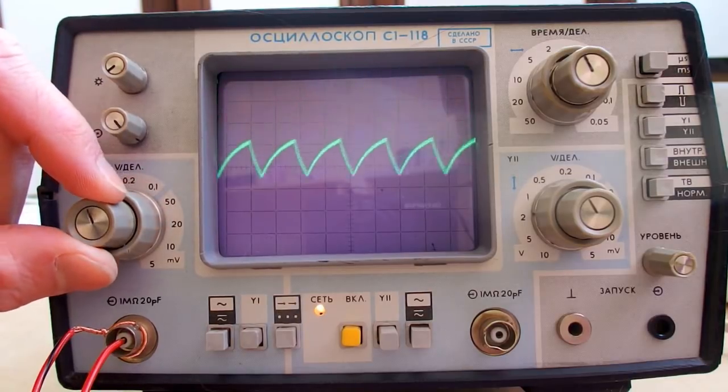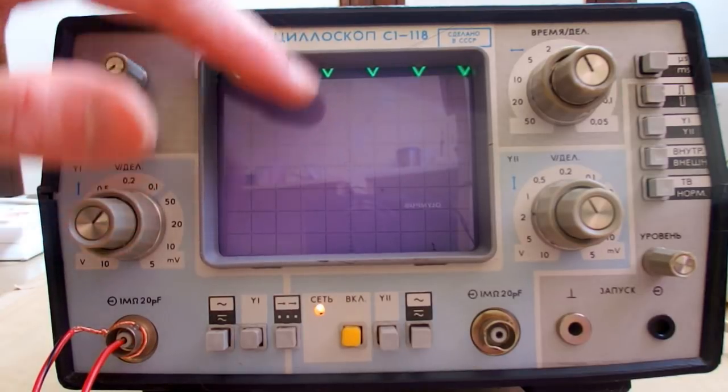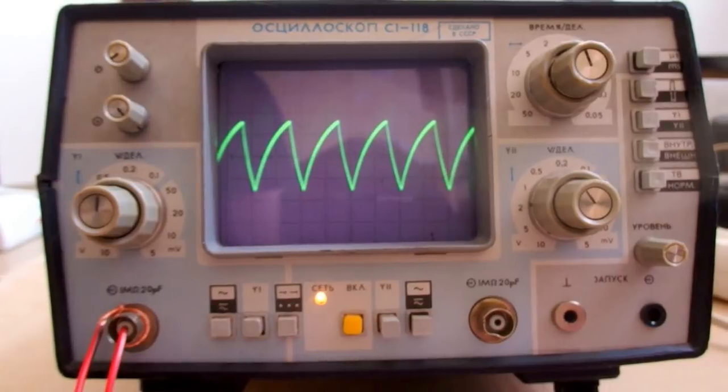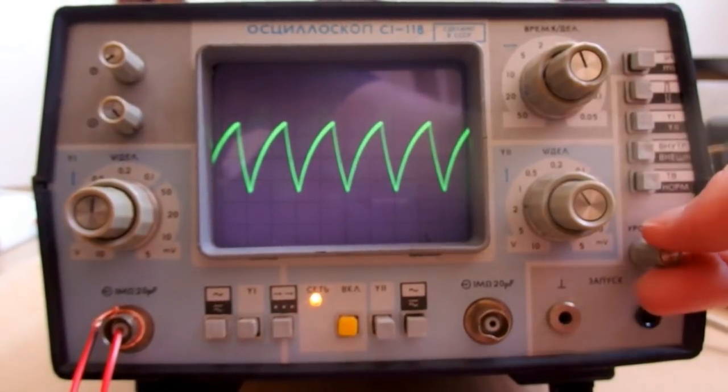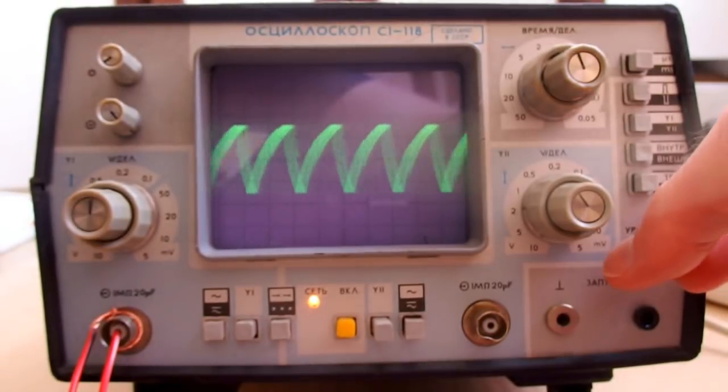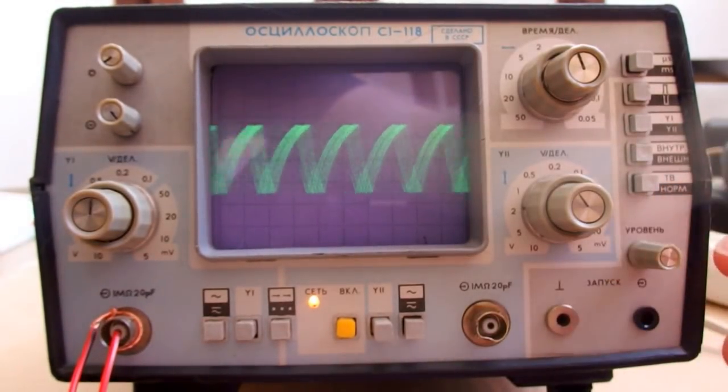Sometimes you have to move it like this to find it. It may disappear behind the edges of the screen. Here's the sync level knob. To set the sync level. You have to find the right position where it syncs. Otherwise it's out of sync.